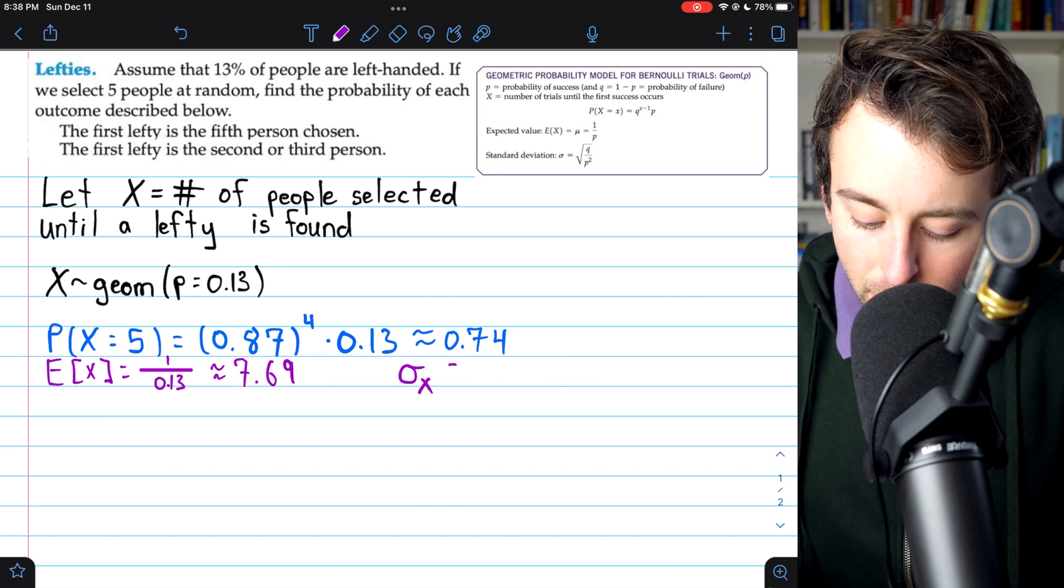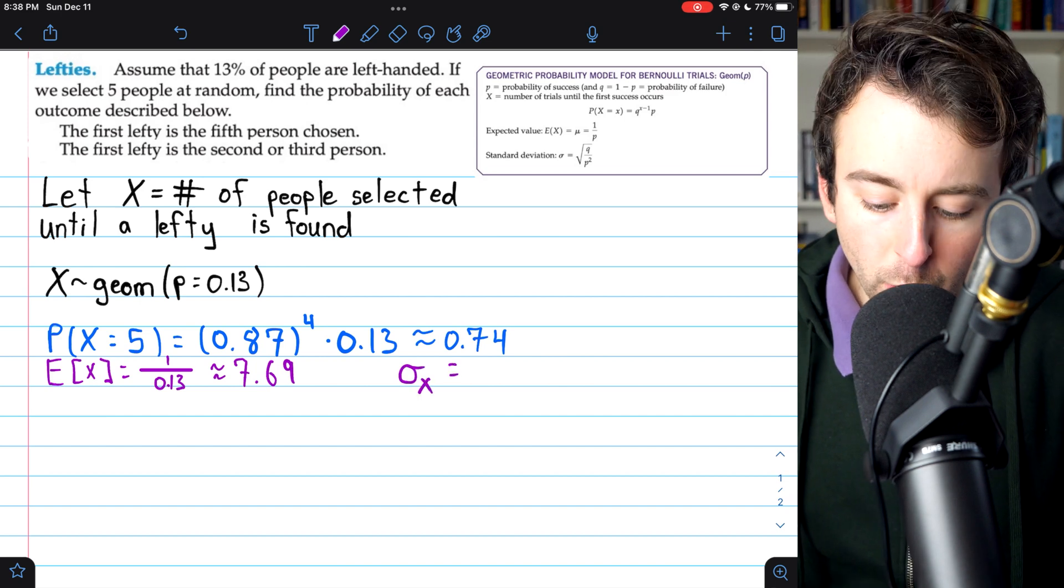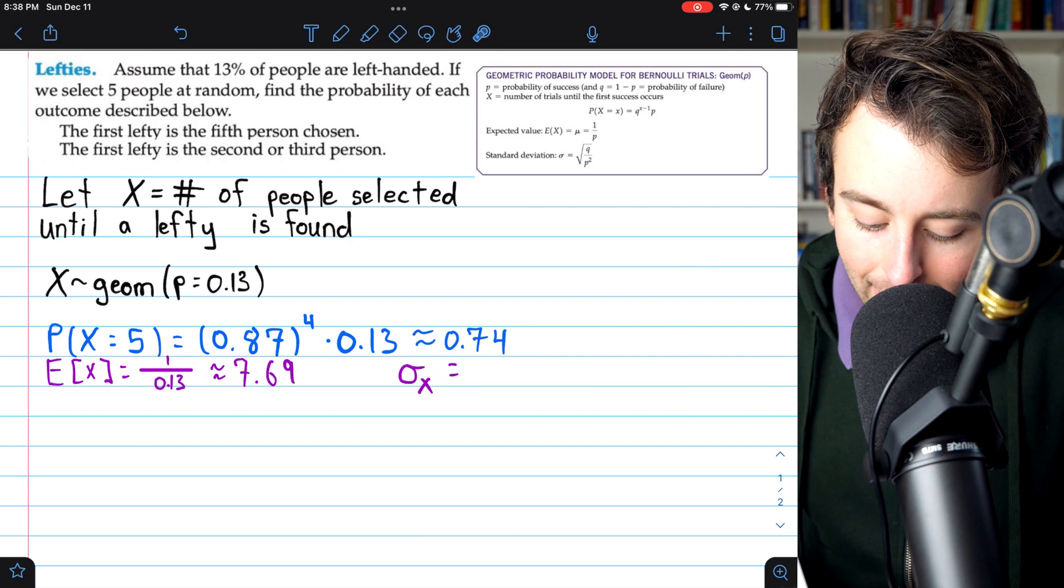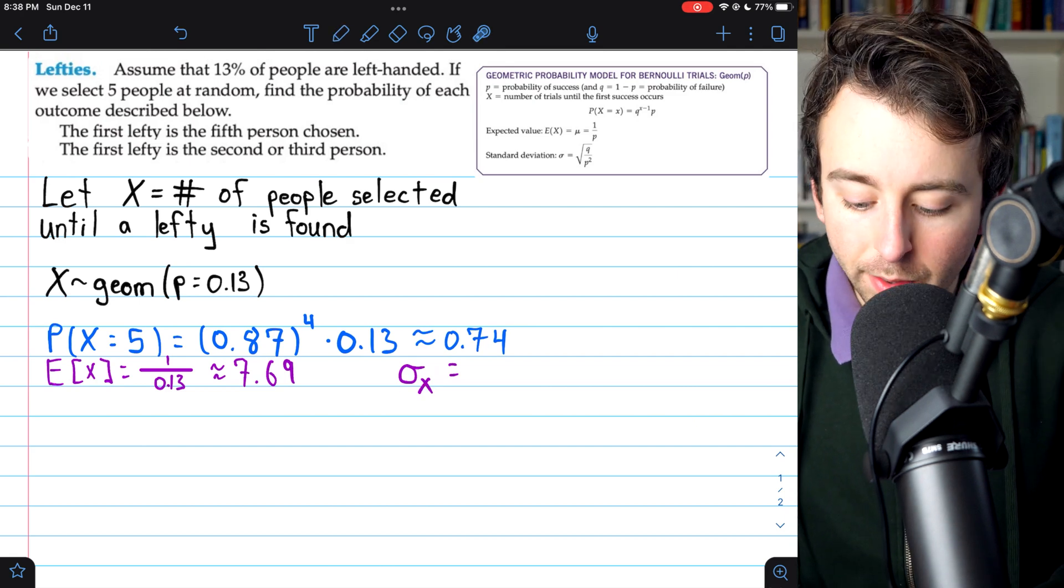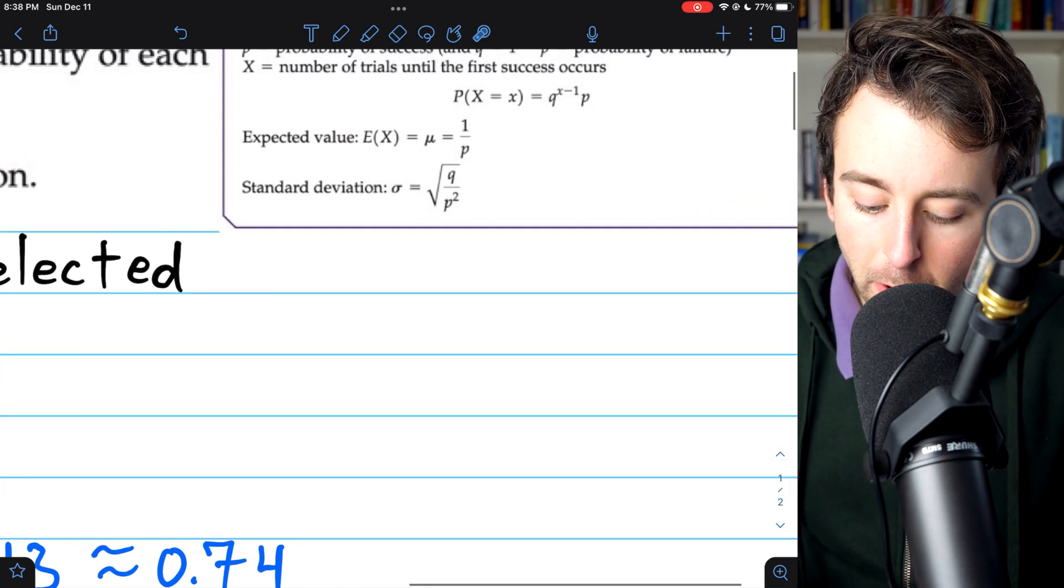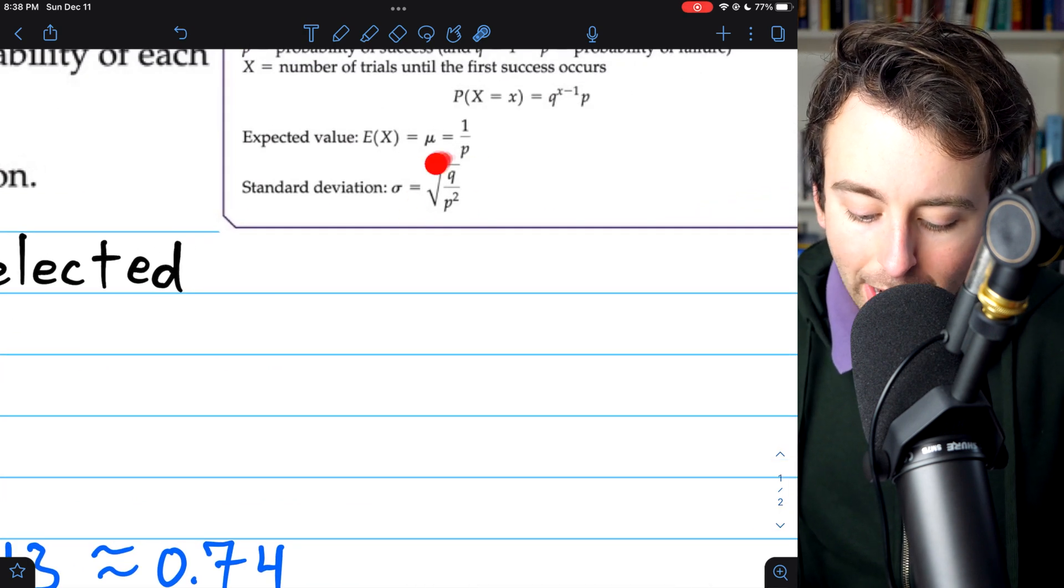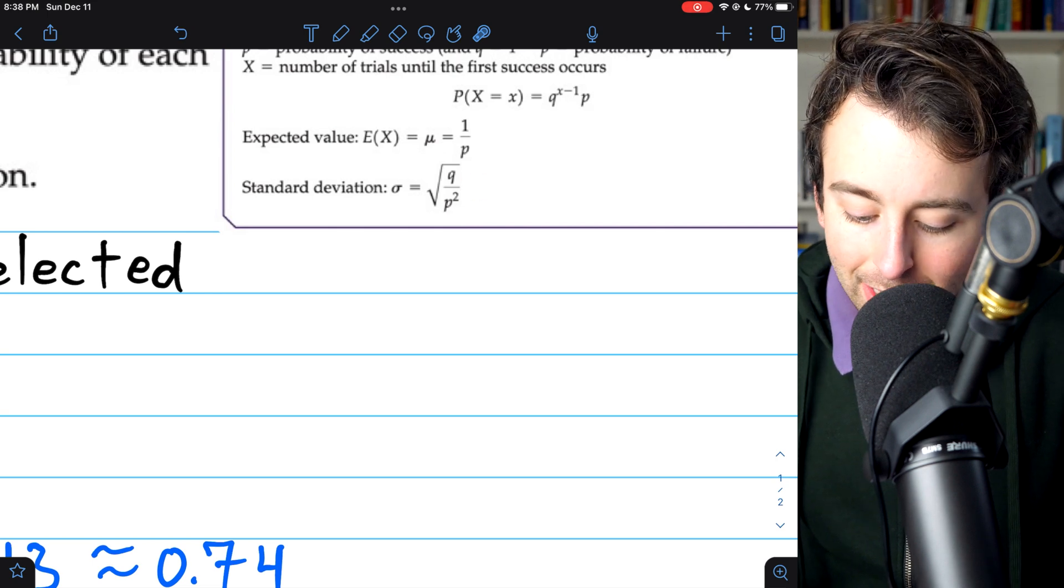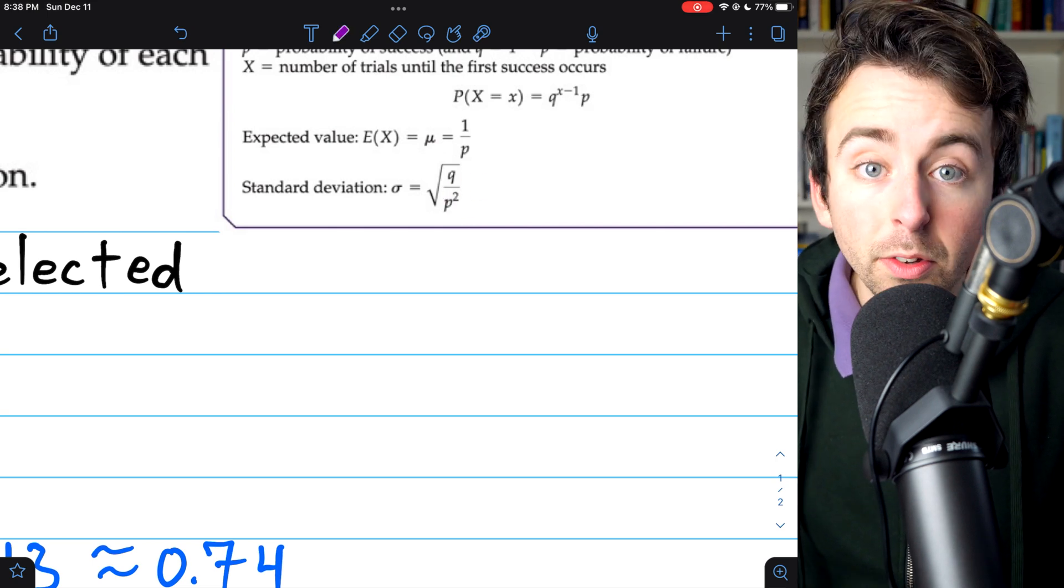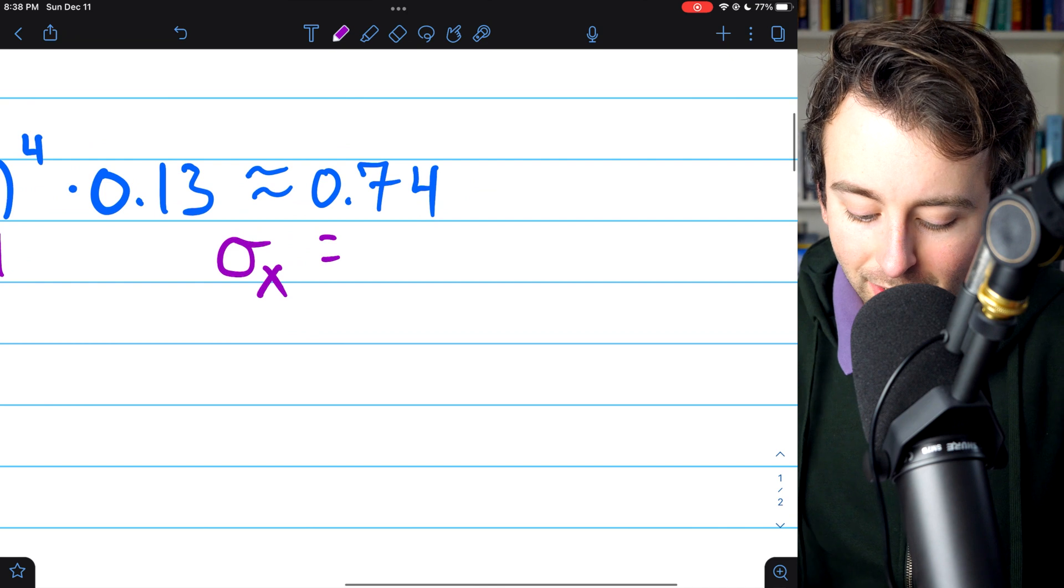Now we can calculate the standard deviation of our geometric random variable. I'll denote that as sigma subscript x. To calculate the standard deviation of a geometric random variable, we need to take the square root of q, the probability of failure, divided by p squared, so the square of the probability of success.